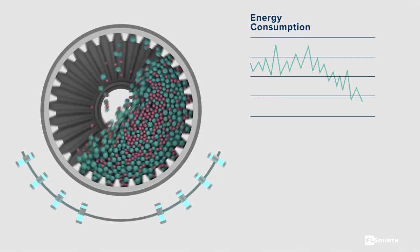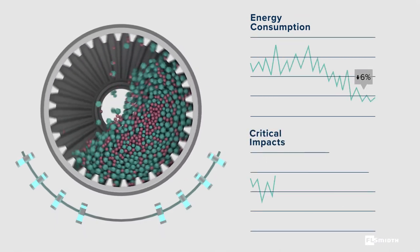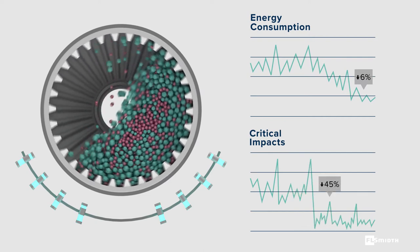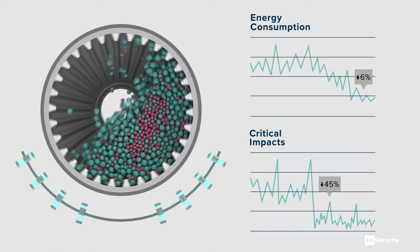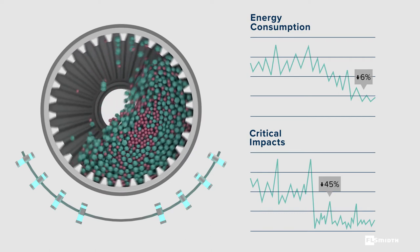To decrease power usage by up to 6%, reduce critical impacts by nearly half, and preserve liner life. With these savings, SAG-WISE Total Process Control can pay for itself in 6 months or less.